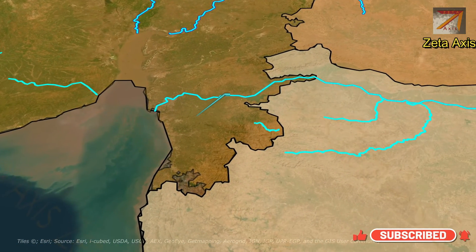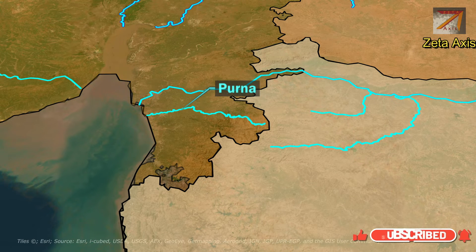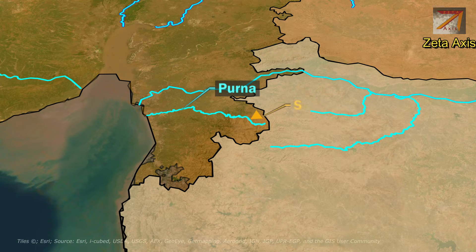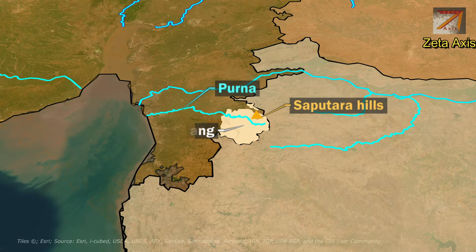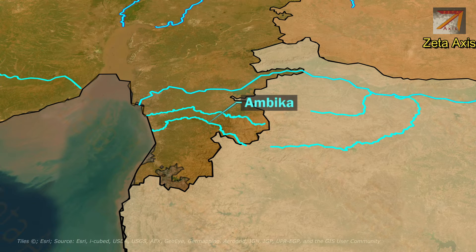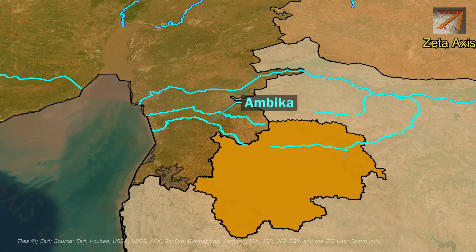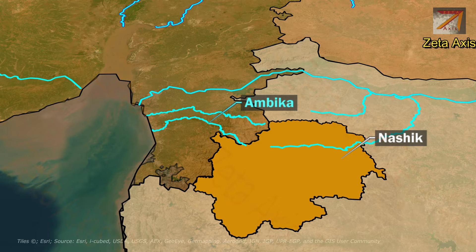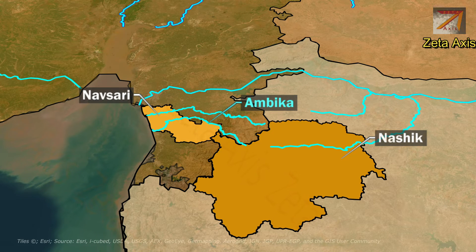The next important river of Gujarat is Purna River, which flows through South Gujarat. It originates in the Saputara Hills of the Western Ghats in Dang district of Gujarat and flows into the Arabian Sea. The next river is Ambika River, also a major river in South Gujarat. It originates in Saputara Hills in Nasik district of Maharashtra and travels 436 km before flowing into the Arabian Sea in Navsari district.